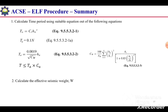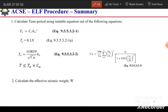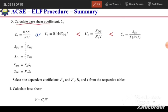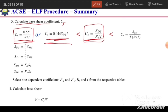Now the summary of the equivalent lateral force procedure. Step 1: calculate the time period using the appropriate equation, then check its upper limit — details are in the previous video. Step 2: calculate the seismic base shear coefficient Cs. The Cs calculated from the main expression must be greater than the minimum values for seismic design categories E and F, and for categories A, B, C, and D, and less than the upper bound value.